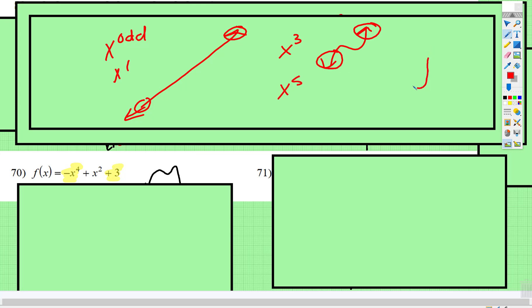x to the 5th, it'll be a little bit more curvy. Endpoints are headed in opposite directions.